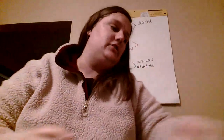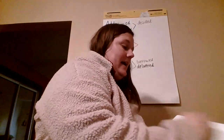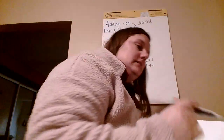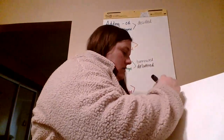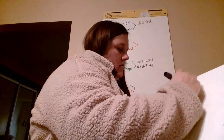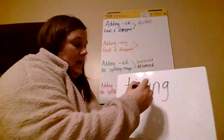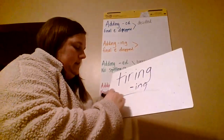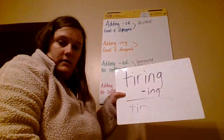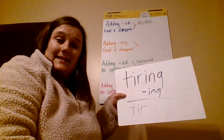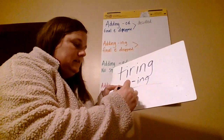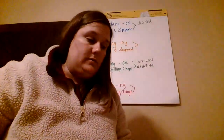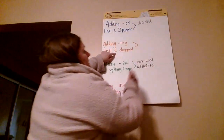I'll do one of the ING words with you guys. It's the same thing, though — you're just going to take the ING off the end instead of ED. So let's pick tiring. I'm going to take that ING off. And what do I get? T-I-R. Is that spelled correctly? No. If you tire easily, that means you need an E on the end, which means I know that it is adding ING, final E dropped.